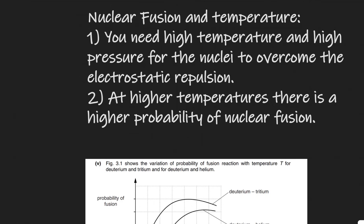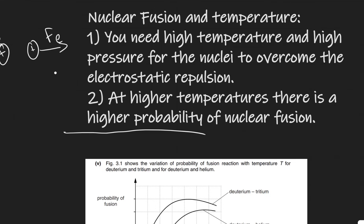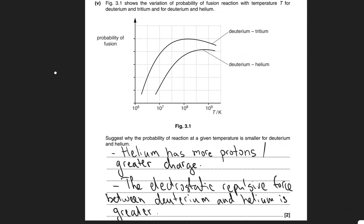Finally, let's talk about nuclear fusion and temperature. You need extreme conditions to achieve nuclear fusion — for instance, the conditions inside the core of a star. You need very high temperature and very high pressure to overcome the electrostatic repulsion between the positively charged nuclei. At higher temperature, there's a higher probability of nuclear fusion, and this has come up in exam questions. Here's a question from OCR 2014.